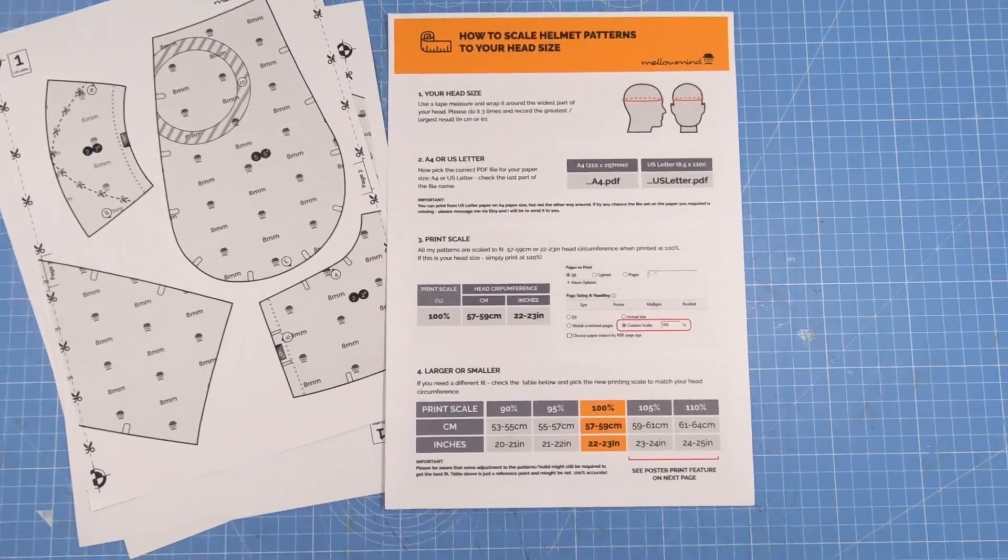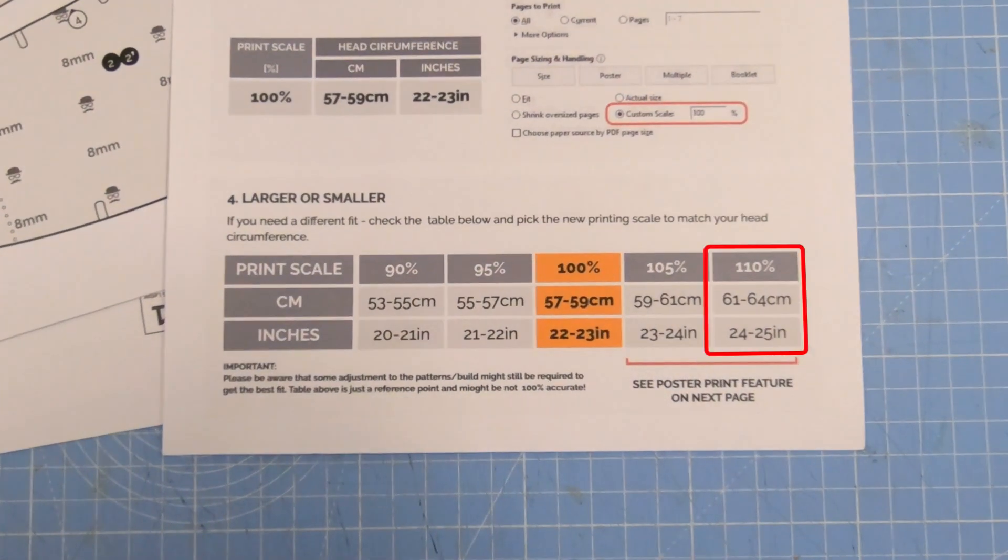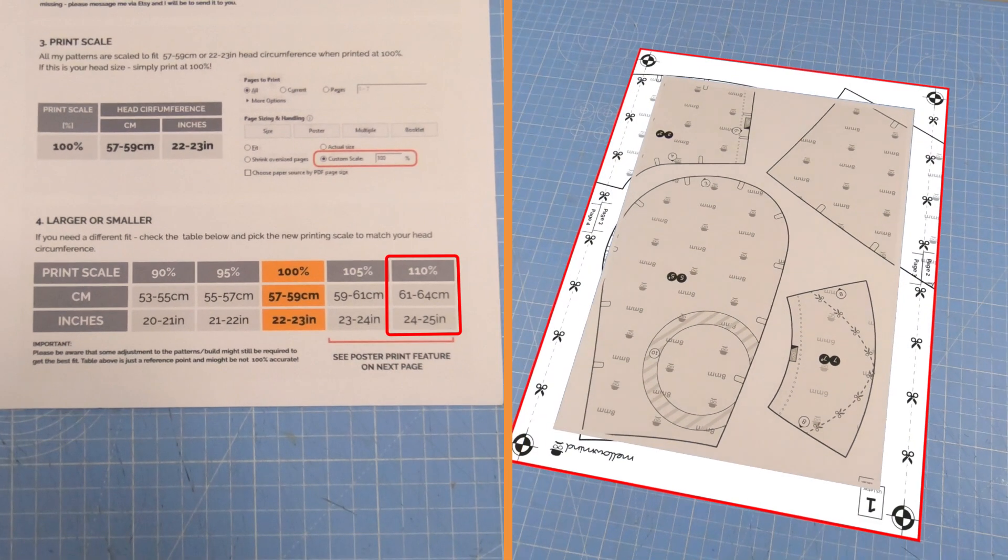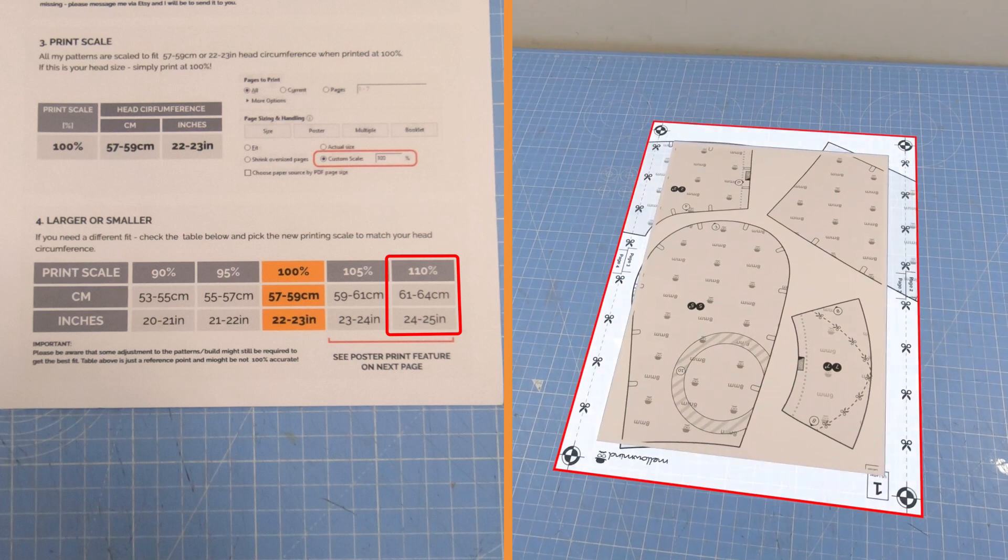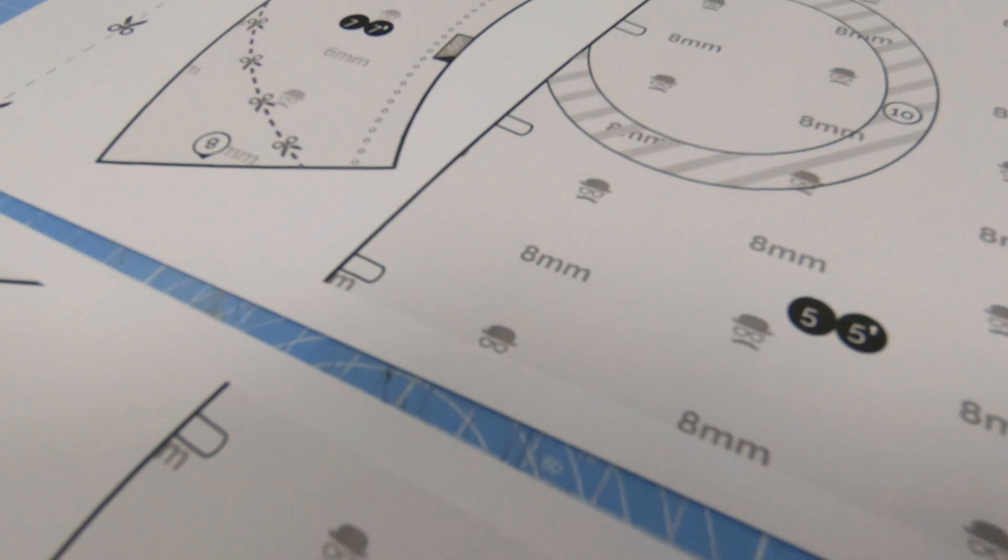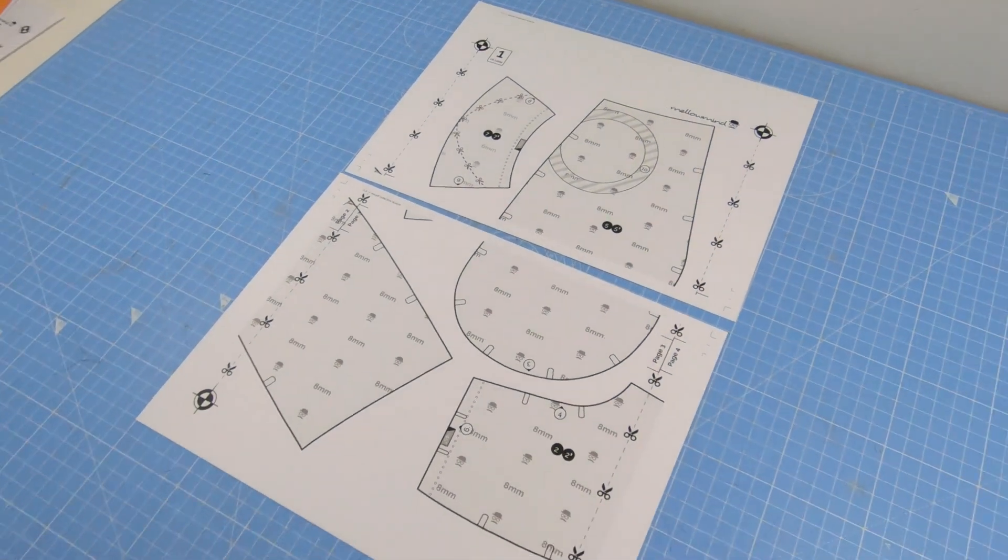On the other hand, a 63 cm head will require a 110% printing scale. However, at this size the content of each page will exceed the printing area, so you must use the poster print feature. This function additionally splits pages into multiple sheets.